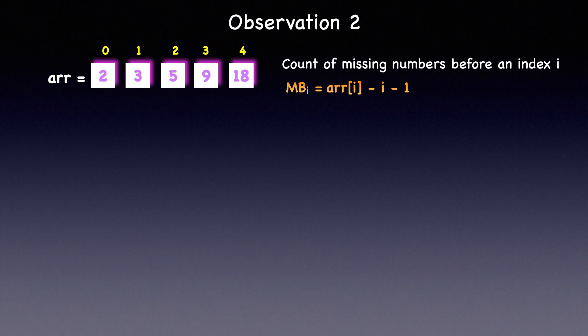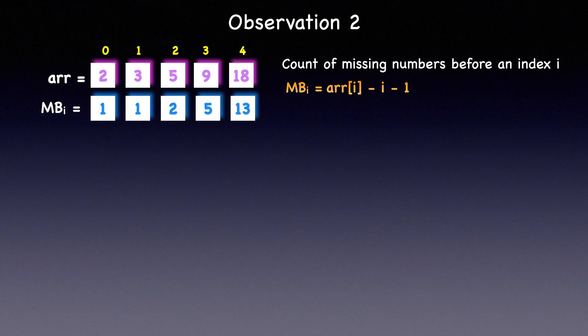So, using the missing before index formula, let's calculate the count of missing numbers before each index. Let's assume k is equal to 4. Now, consider this, where would the 4th missing number be located? In other words, between which indices should the 4th missing number lie?